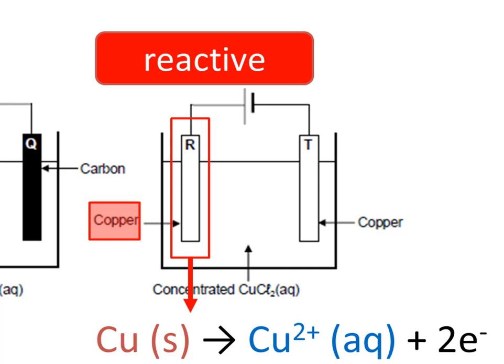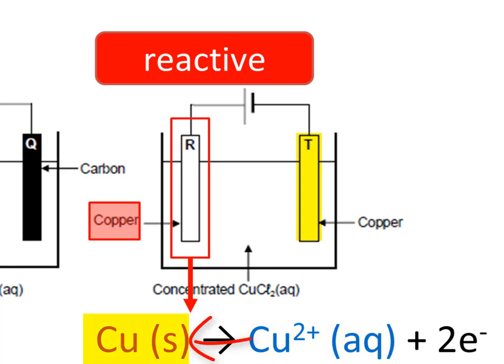How do we use such a cell? We use it when we have impure copper which we want to refine. We connect the impure copper rod to the positive terminal of the battery. Only the copper in the rod — not the impurities — will undergo this reaction and go into solution. The impurities will stay behind. The negative cathode then turns those ions back into copper metal and deposits it. In that way, we get the pure copper from R and deposit it onto T.